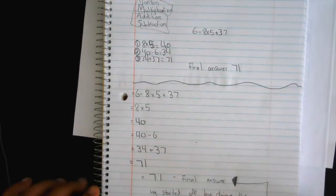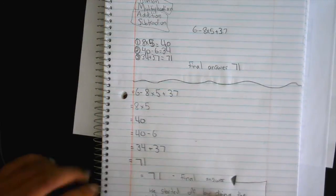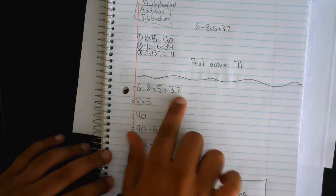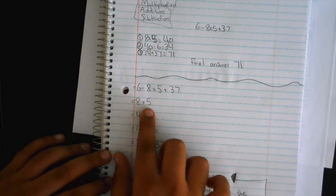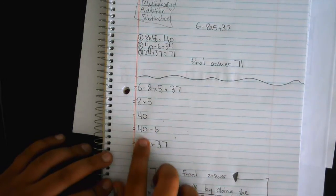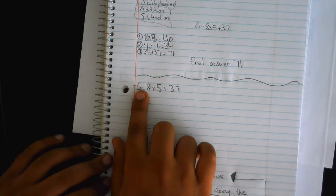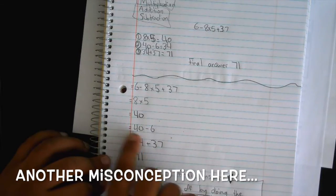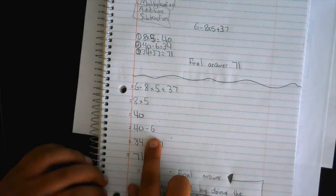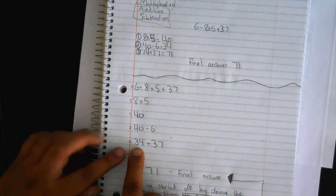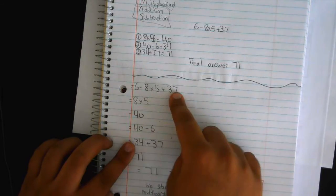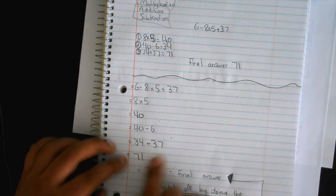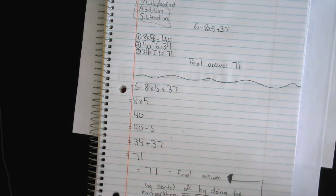So what my group and I did was that in the beginning, like they did, 6, this was the equation, and then we did 8 times 5 first and we got 40. And then we did subtraction because that comes before, so we did 40 minus 6 equals 34, and then we had to add 37. So 34 plus 37 equals 71, and that was our final answer.